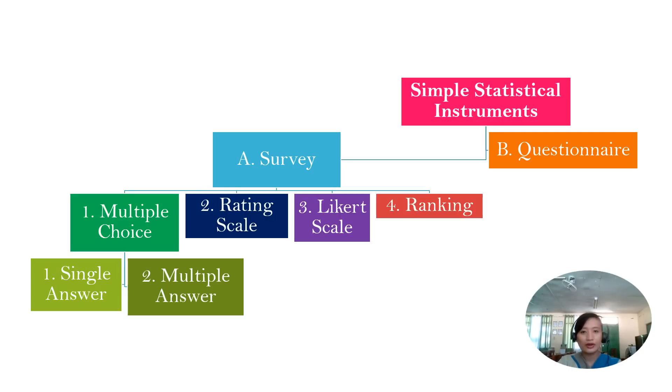To sum it all up, here are the different statistical instruments that we have discussed. So again, we have survey. Survey has four classifications. It can be multiple choice, rating scale, Likert scale, or ranking. And then multiple choice can be classified as a single answer multiple choice, or multiple answer multiple choice. And we have here a questionnaire, which is defined as another tool we use in conducting a survey. So this is just a tool. And remember, it has a series of questions that your respondents have to answer.